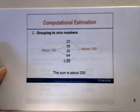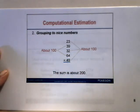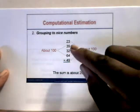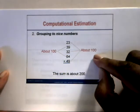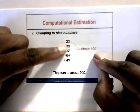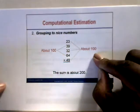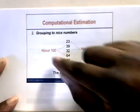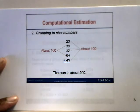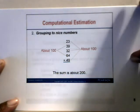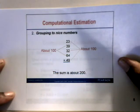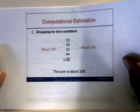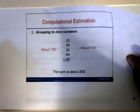The second estimation technique is grouping to nice numbers. For 23 plus 39 plus 32 plus 64 plus 49, note that 23, 32, and 49 sum to about 100, and 39 plus 64 is close to 100. So 100 plus 100 gives approximately 200. This shows how you can estimate by grouping numbers to nice round values.